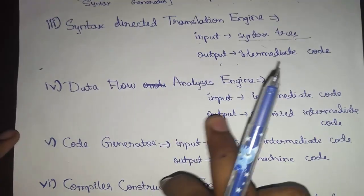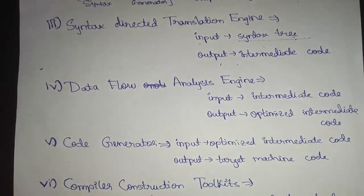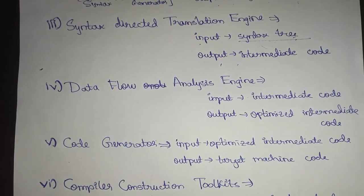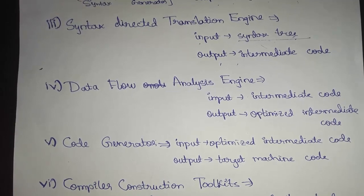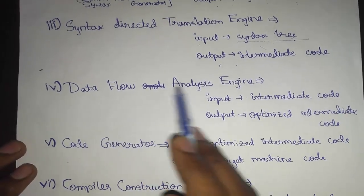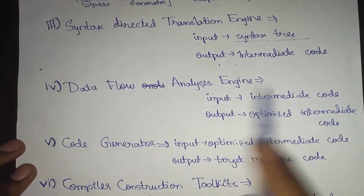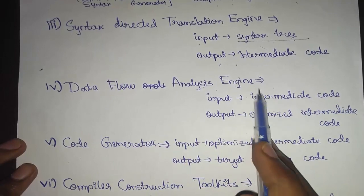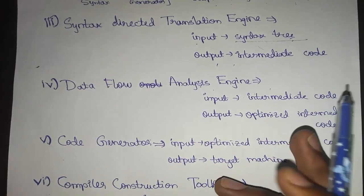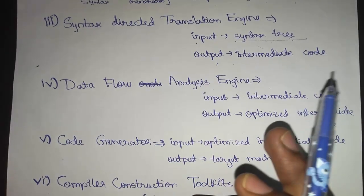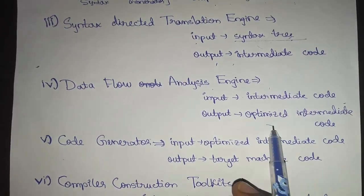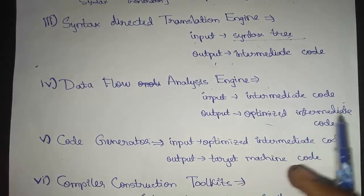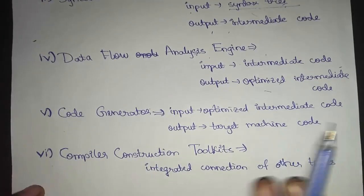The data flow analysis engine is used for machine-independent code optimization — that is, optimized code generation. It is a tool used to provide the necessary code optimization. The input is the intermediate code and the output is the optimized intermediate code.